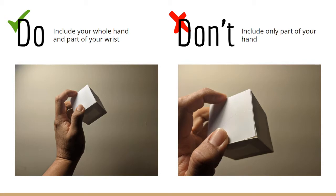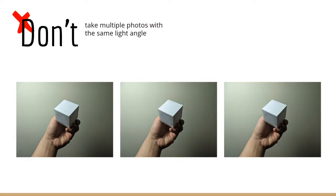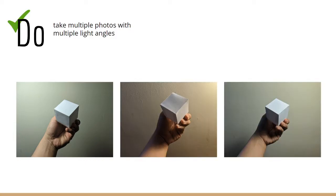Do include your whole hand and part of your wrist. If you find yourself only seeing a couple of fingers and cropping out a lot of your hand, move your camera farther away and zoom out so you see part of your wrist and your whole hand along with the object. Do take multiple photos with multiple light angles — keep the same grip and angle with the object but move the desk lamp around so you have very different lighting conditions in each shot. Experiment with multiple light angles. Don't just take multiple photos with the same light angle — you'll learn a whole lot more about how light affects your subject when you change it up.